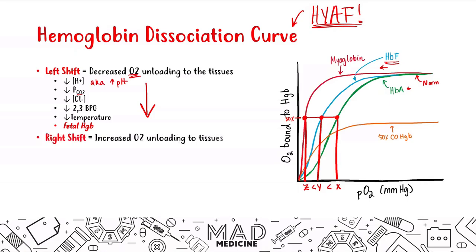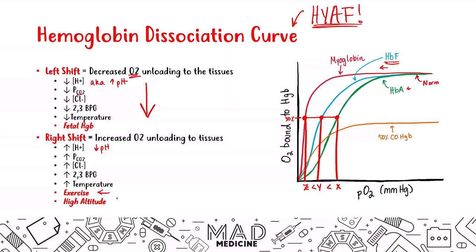In a right shift, you're going to have an increase in unloading to the tissues. What causes it? A decrease in pH or increase in hydrogen concentration, an increase in partial pressure of CO2, increase in chloride concentration, increase in 2,3-BPG, and an increase in temperature. Keep in mind that exercise and high altitude are also going to cause a right shift.